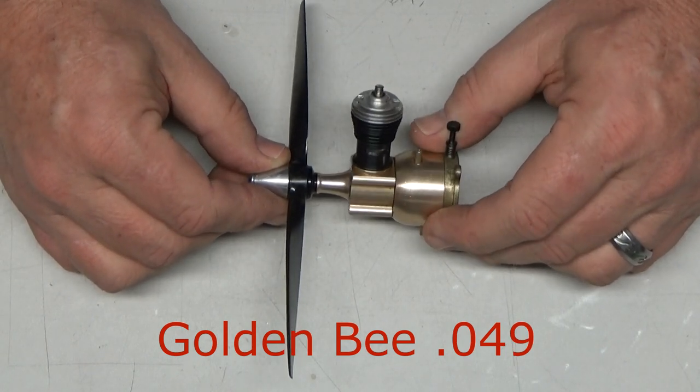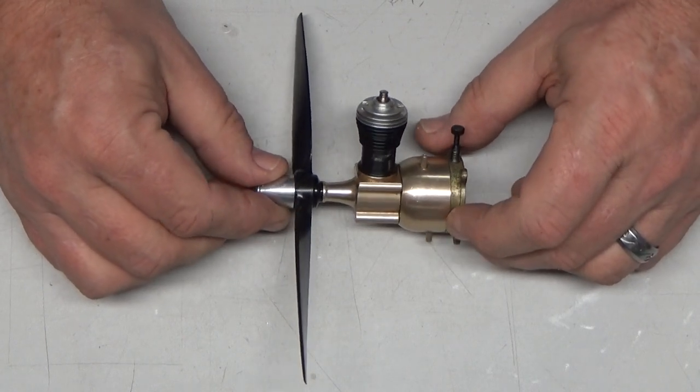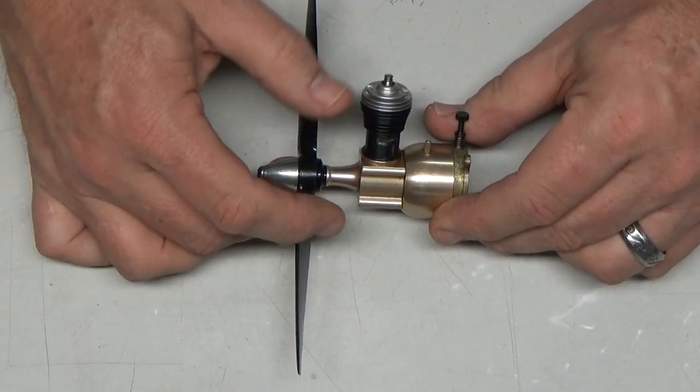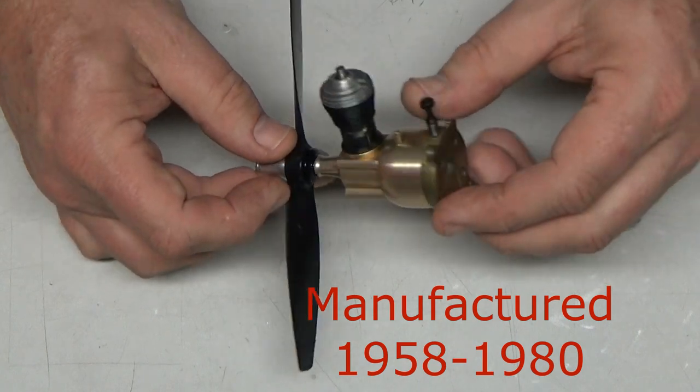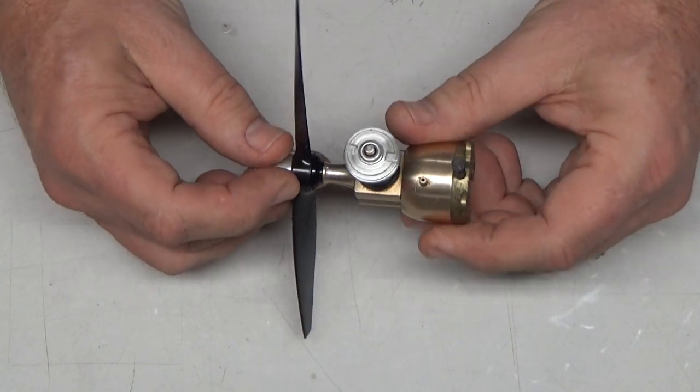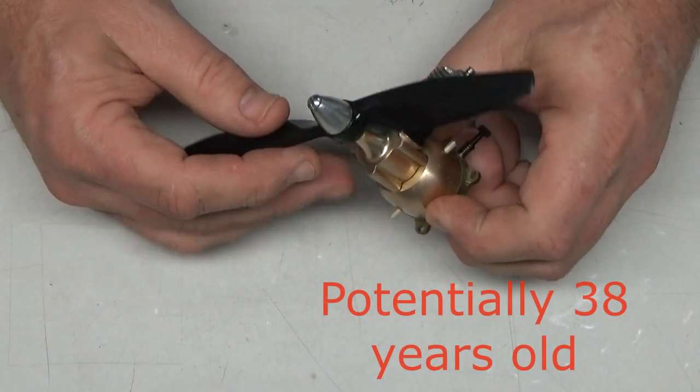Now I don't know a whole lot about these small 1.5A engines or Cox engines in general, but I do know this from Wikipedia: this engine was produced between 1958 and 1980, which means that if this is an original and not a rebuilt engine, this engine is at least 38 years old.